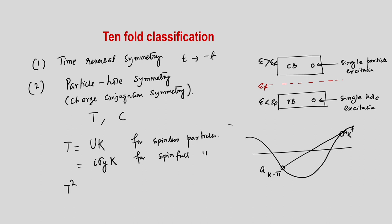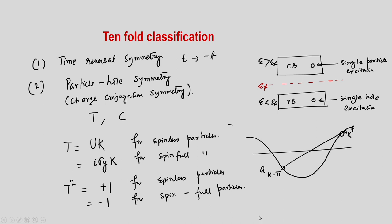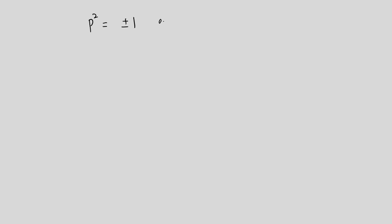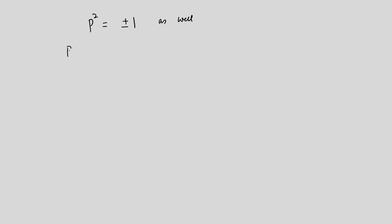T² equals plus 1 for spin-less particles and minus 1 for spin-full particles. Similarly, C² also has values of plus 1 and minus 1 — whether you do the particle hole transformation twice gives a minus sign or a plus sign. Both T² and C² have values equal to plus or minus 1.